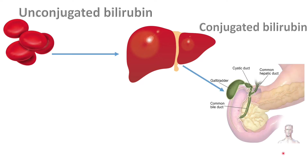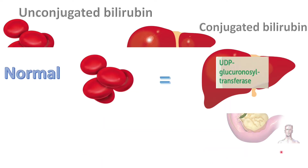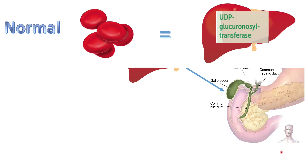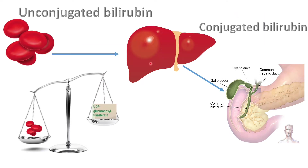Conjugated bilirubin goes through the bile to the intestine and then we get rid of it through stool. Normally we do not have jaundice because the rate of turnover of our blood cells is equated by the conjugating capacity of the liver — neither is overwhelming the other. However, whenever there is an imbalance, you get jaundice.